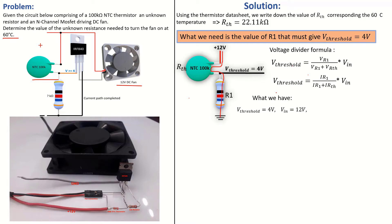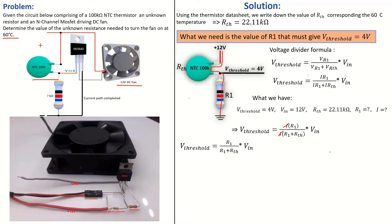Our known values are: V-threshold = 4 V, Ve = 12 V, and R-thermistor = 22.11 kΩ. We are solving for R1. After cancelling I, our equation becomes: V-threshold = R1 / (R1 + RTH) × V-in. Now we can substitute the known values and work it out.